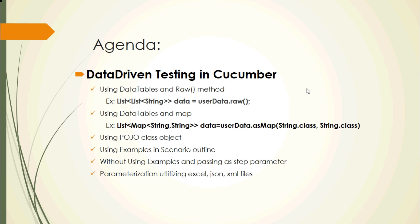So let's see the agenda for today. For data-driven testing in Cucumber, I have listed six possible ways: utilizing data tables in the raw method, utilizing data tables in the HashMap, then using a POJO class object, then using examples in the scenario outline, and without using examples — passing it as a parameter in the step itself. And the last one is parameterization utilizing Excel, JSON, and XML files. I won't prefer the last one because Cucumber already has so many existing features to handle the data-driven testing part.